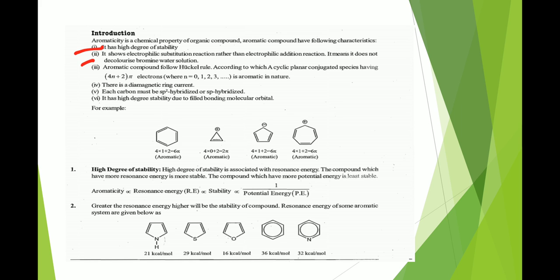The stability of an aromatic compound is directly proportional to its resonance energy and its aromaticity, but inversely proportional to its potential energy. Examples of compounds are given with their resonance energies. The stability order according to resonance energy is: benzene has more resonance energy than pyridine, followed by thiophene, pyrrole, and furan.